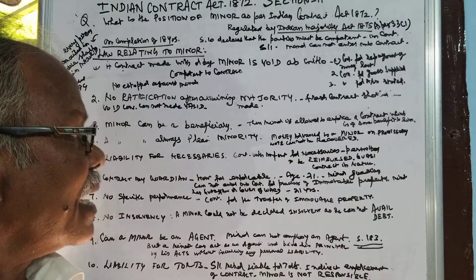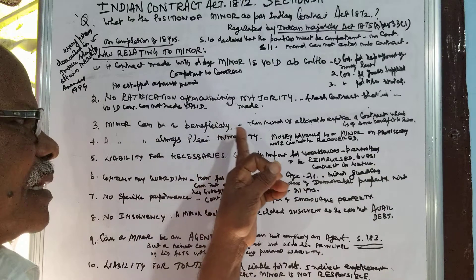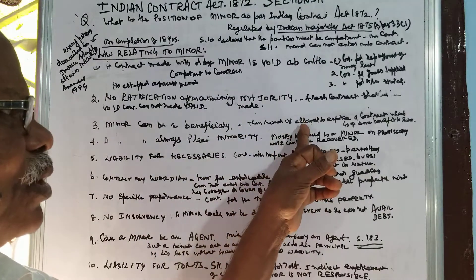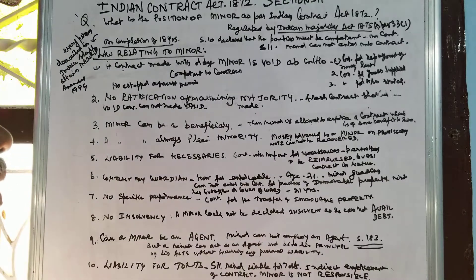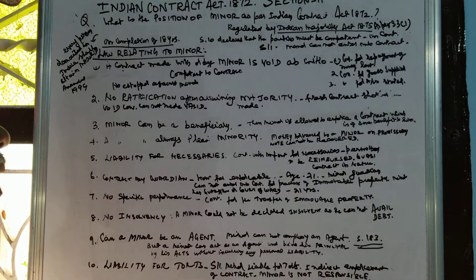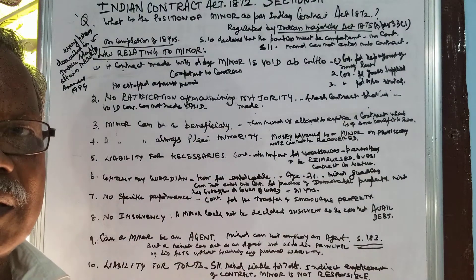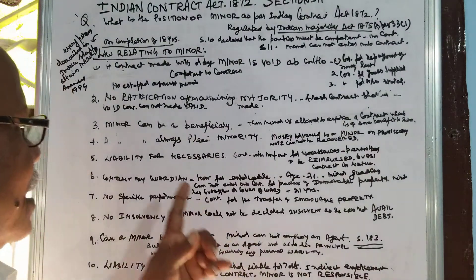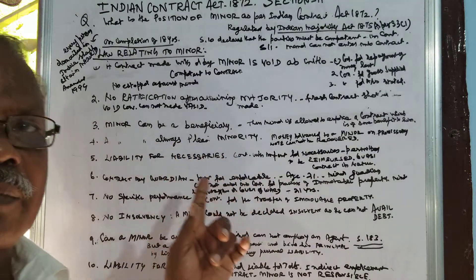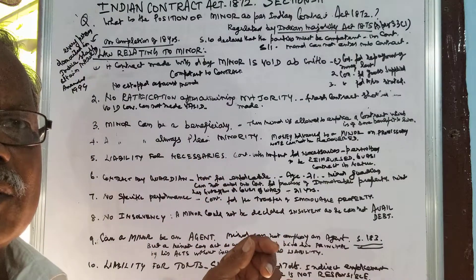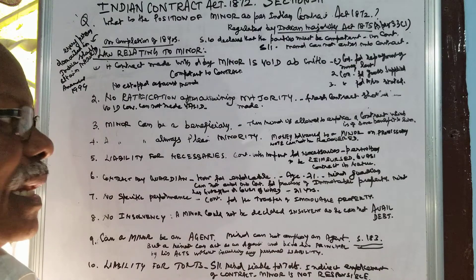A minor can be allowed as a beneficiary in case of a contract. A minor can always plead minority — a minor is always a minor. So, under the protection of being a minor, he can plead minority.